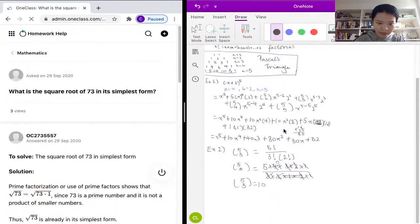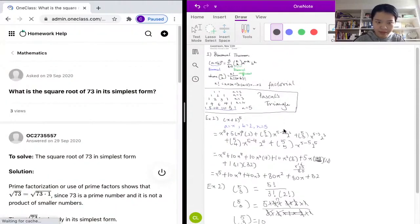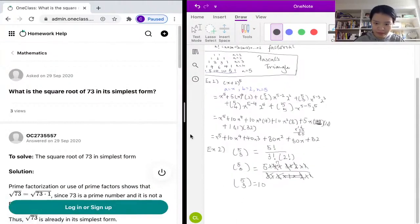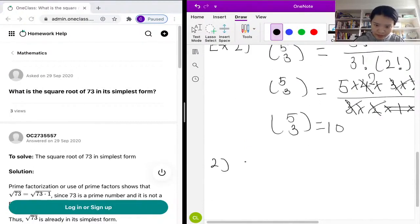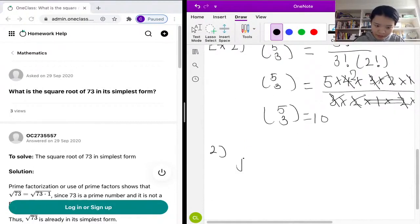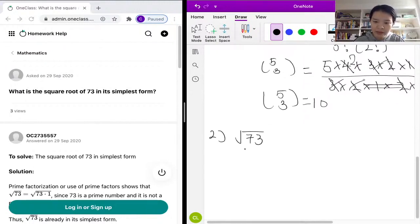So our second question is: what is the square root of 73 in its simplest form? Looking at the number 73, usually how we solve this problem is...